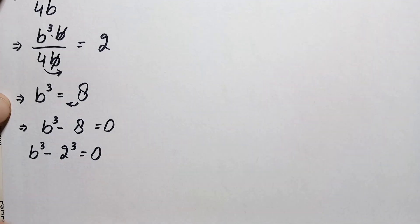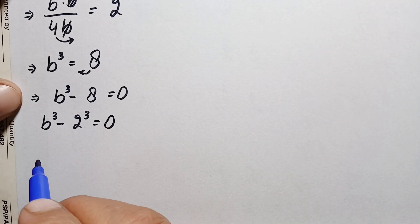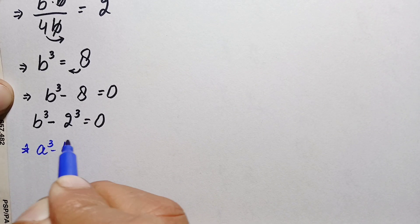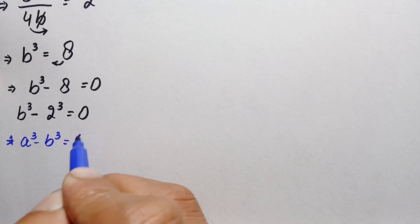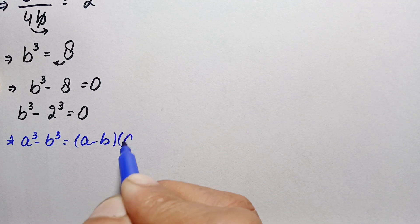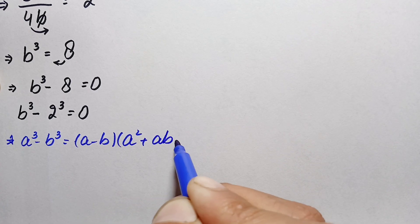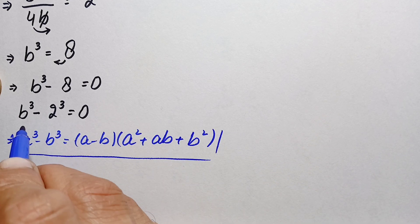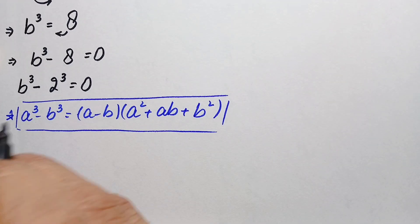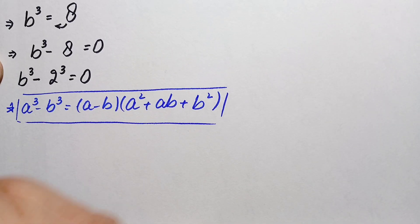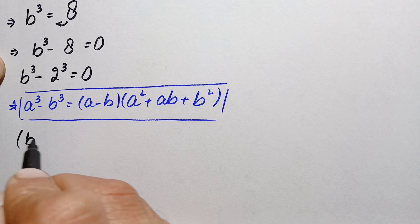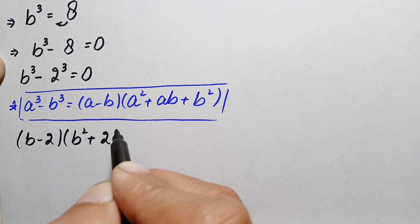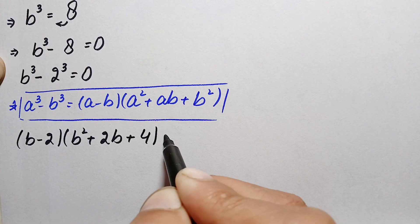We will use the cubic algebraic identity: a cubed minus b cubed equals (a minus b)(a squared plus ab plus b squared). Using this identity, where our a is b and our b is 2, the equation becomes (b minus 2)(b squared plus 2b plus 4) equals zero.